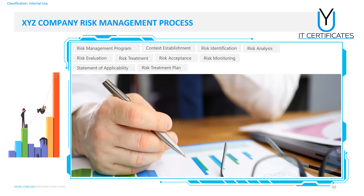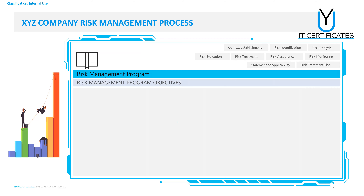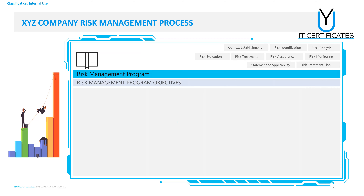To refresh your mind, the risk management processes are: risk management program, context establishment, risk identification, risk analysis, risk evaluation, risk treatment, risk acceptance, and risk monitoring. There are also two important topics related to ISO 27001 if you are conducting risk management for ISO certification.